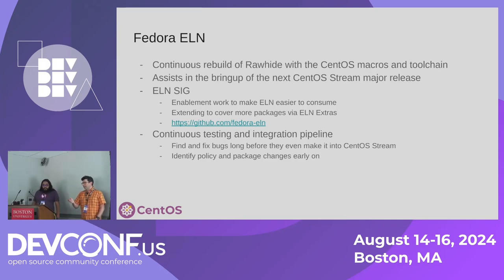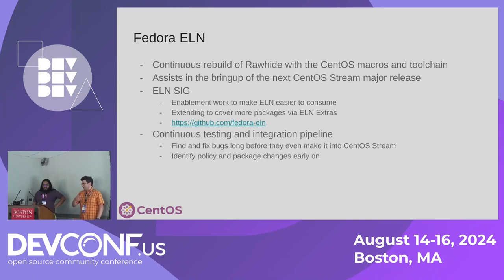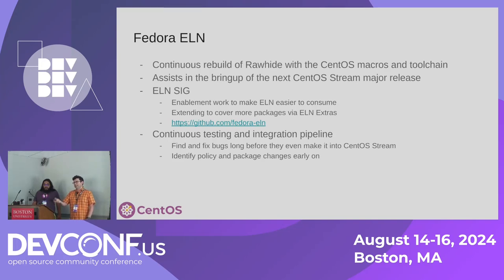ELN is a continuous rebuild of Fedora Rawhide — the development distribution where changes land first — rebuilt with the CentOS macros and toolchain. It's as if every day we were making a new CentOS Stream release based on today's Fedora. Instead of doing all the work to bring up a new release at the end, we spread it continuously throughout Fedora's lifetime, and whenever changes come up, we can immediately assess the impact. This work is done by the ELN SIG within Fedora, focusing on enablement, tooling, and infrastructure. The SIG also established ELN Extras, which provides coverage for packages that won't be part of CentOS Stream and RHEL but will be useful for things like EPEL.